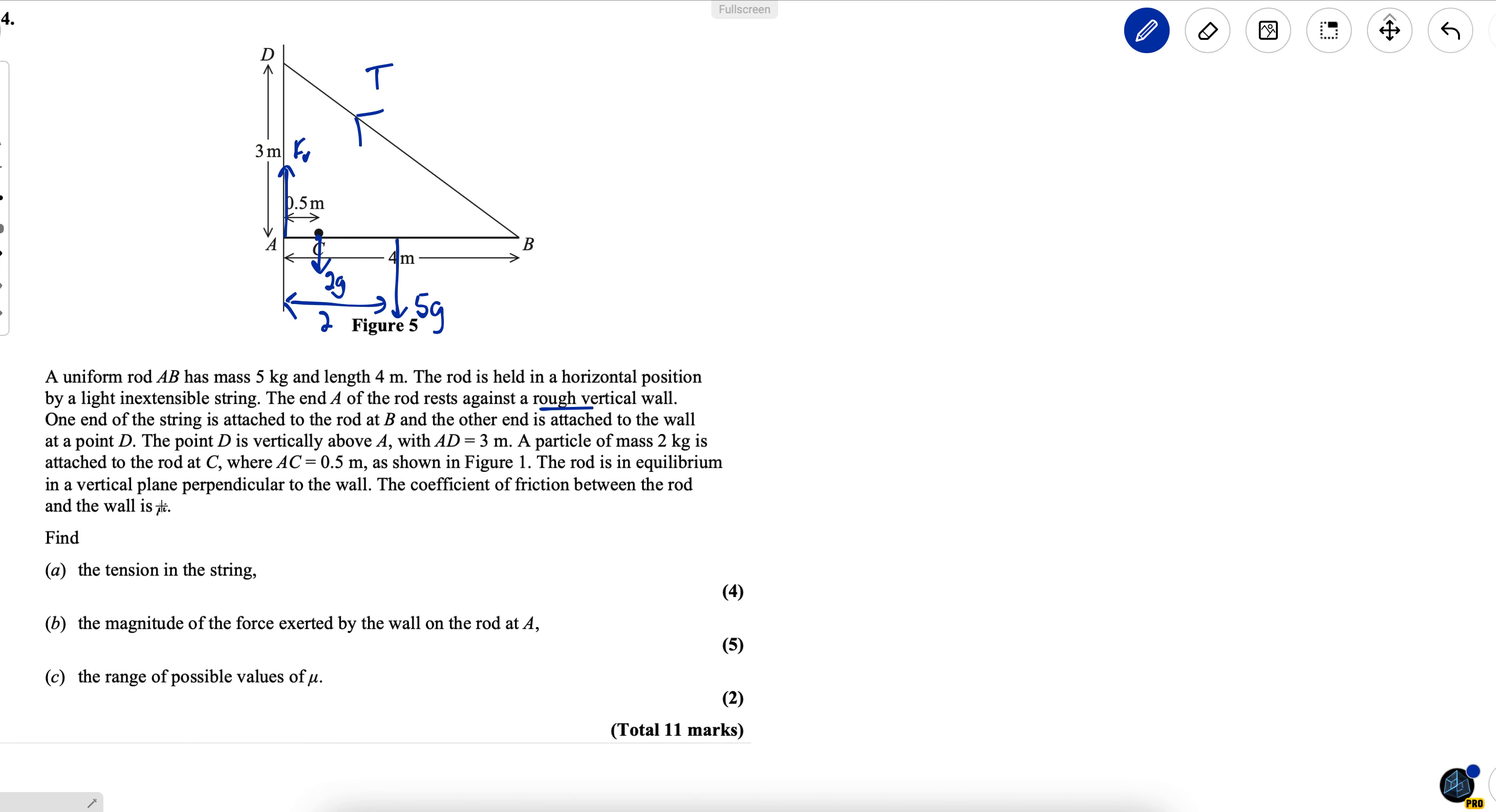The rod is in equilibrium in a vertical plane perpendicular to the wall. The coefficient of friction between the rod and the wall is mu. We don't know that. So tension in the string we have to find. I need to mark on a few more things before I can proceed with this question.